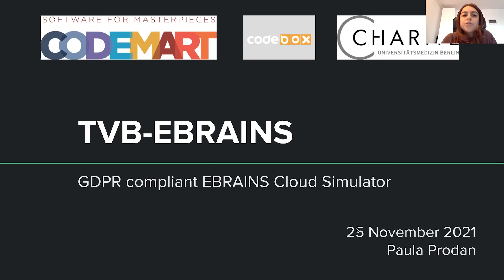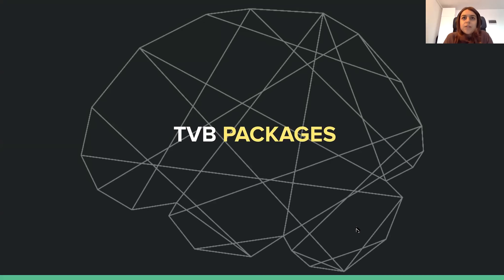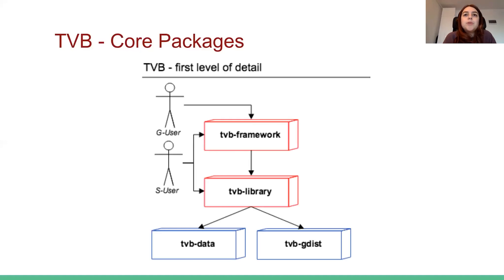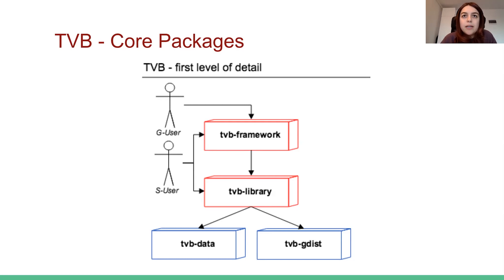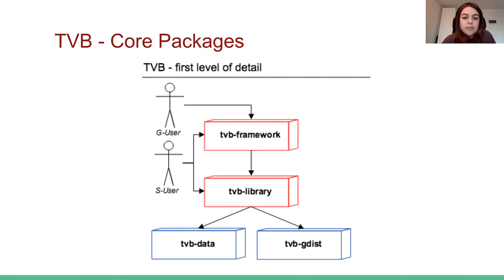I will start with a short overview of the TVB packages. TVB is a simulator that works at the brain region level, so at a large scale. The code for this simulator is part of a package called TVB library, which is a standalone Python library that can be easily installed from multiple sources like PyPI or Anaconda. Besides the simulator, it also contains standardized data types used throughout TVB, like connectivity and surfaces, and several analysis functions.